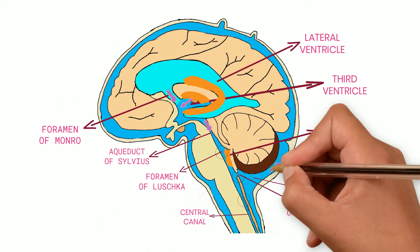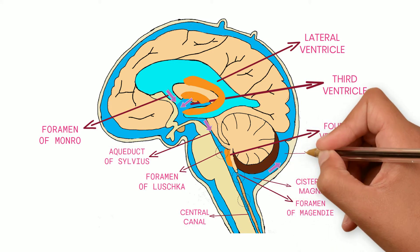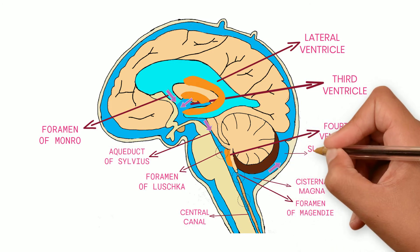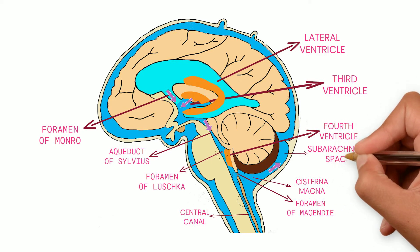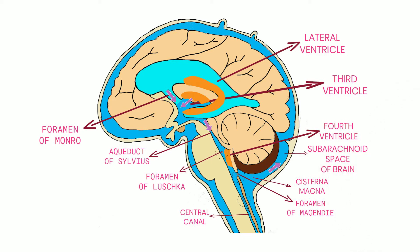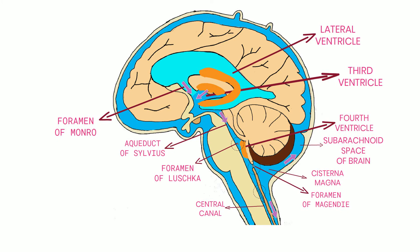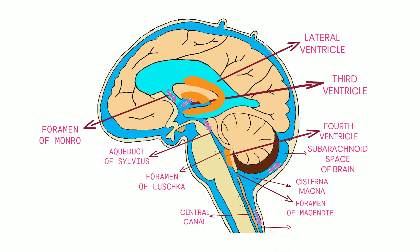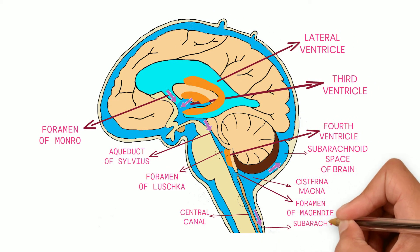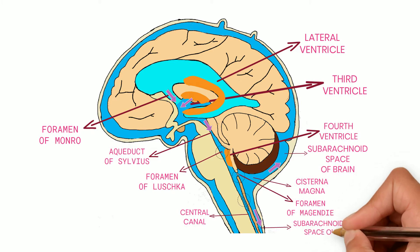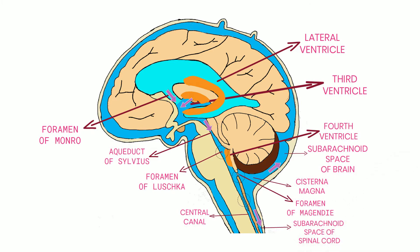These cisterns are continuous with the subarachnoid space around the brain and spinal cord, so CSF flows into the subarachnoid space around the brain and spinal cord. CSF then circulates and ultimately travels upward through the subarachnoid space around the cerebrum until it reaches the arachnoid granulations.